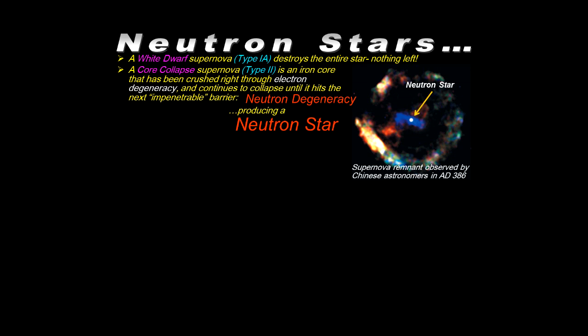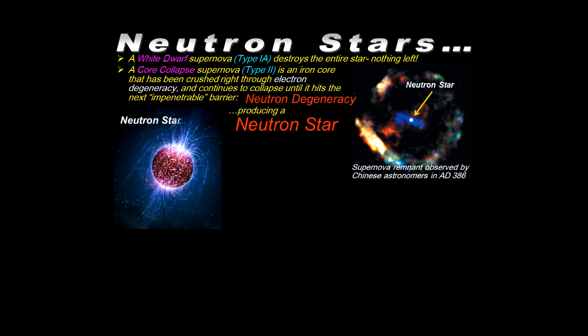Here is an example of a neutron star. It's a supernova remnant observed in 386 AD. There is the neutron star right in the center of this remnant. Here is an artistic rendition of a neutron star, which I kind of like. It has an initial mass of 8 to 25 solar masses, so it's a large star initially.